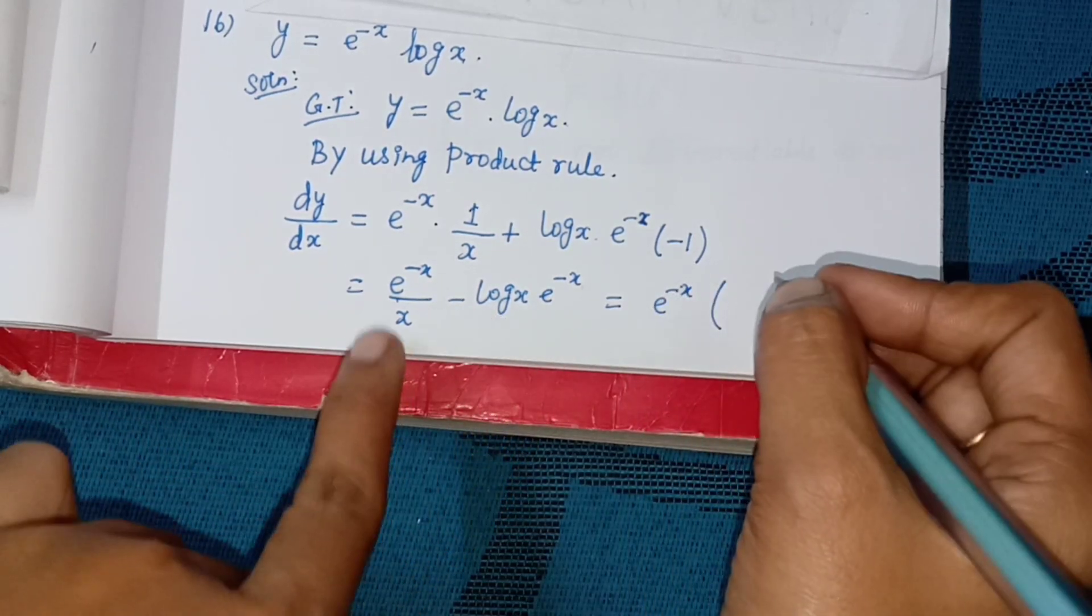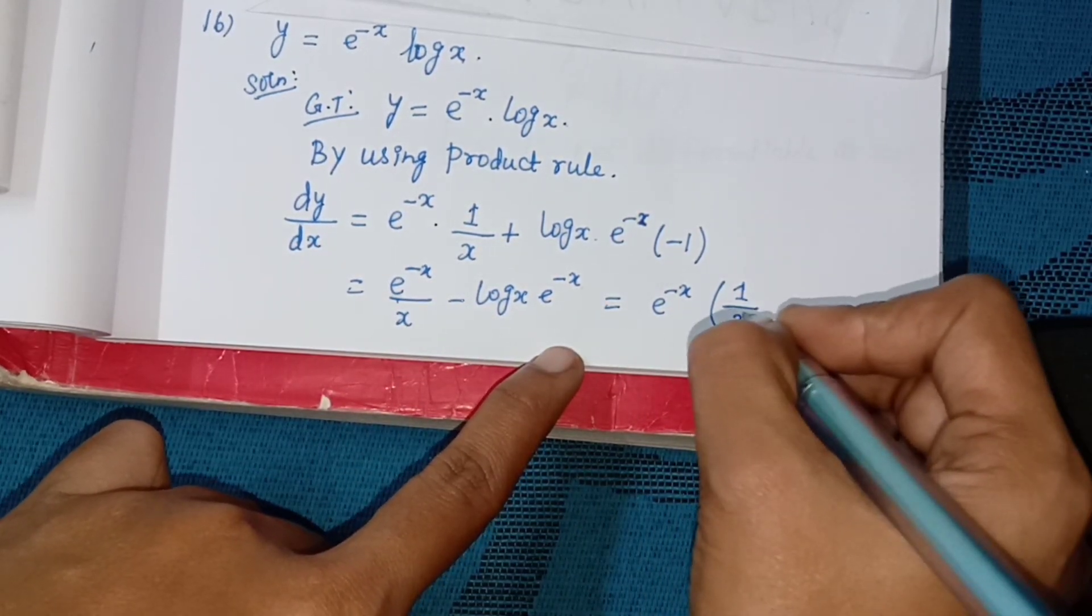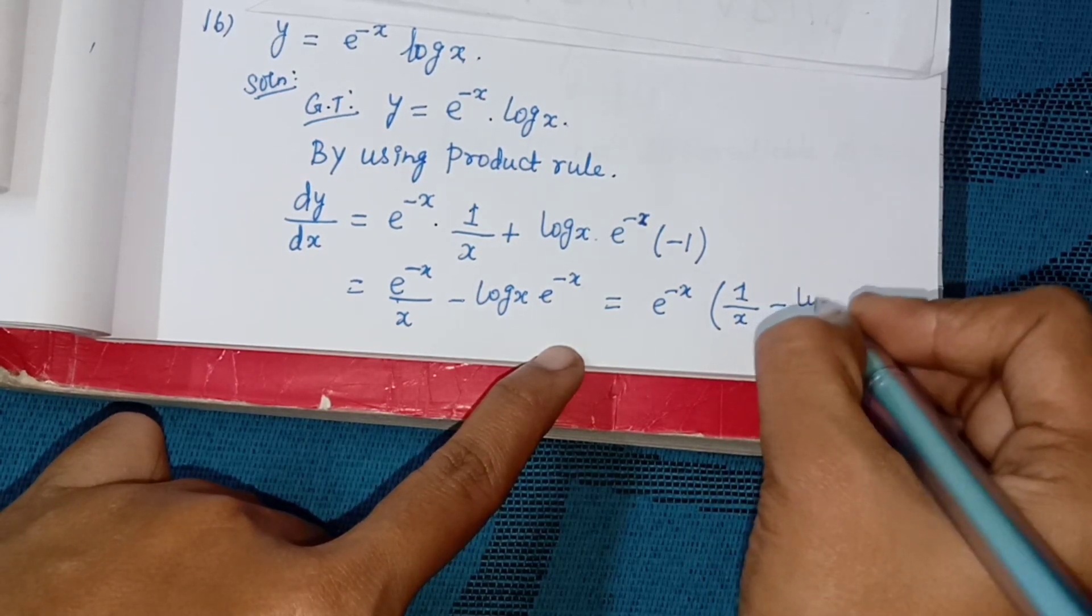Taking common: e power minus x into (1 by x minus log x). This is the final answer.